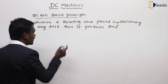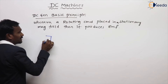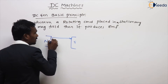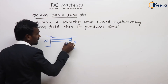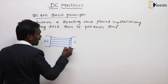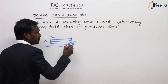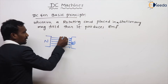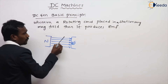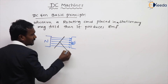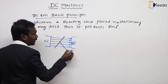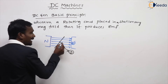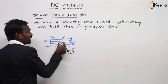Take a stationary magnetic field — this is my stationary magnetic field, excited by the DC supply with some flux density B. And take a rotating conductor; this is a rotating conductor which is rotating at some velocity V. The angle between flux density and velocity is theta.